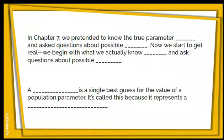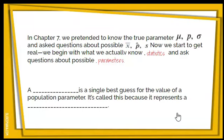Back in Chapter 7, we pretended to know the true parameters and we asked questions about possible statistics — x-bar, p-hat, and s. Now we start to get real. We begin with what we actually know. In statistics, we start with statistics — values that come from a sample — and we ask questions about the possible parameters. We are trying to use our sample to make predictions about the population.